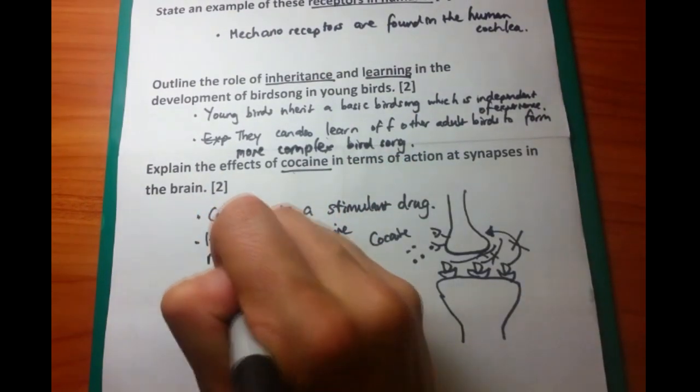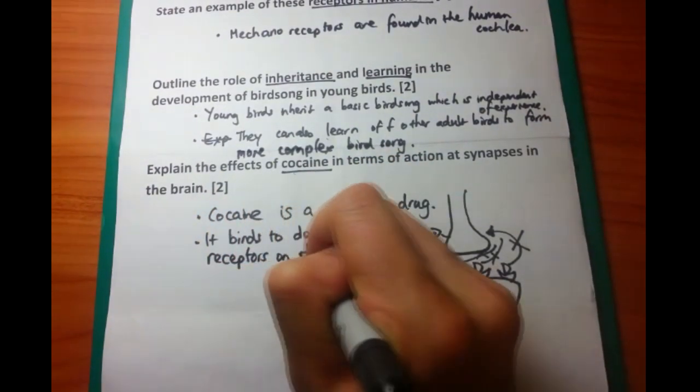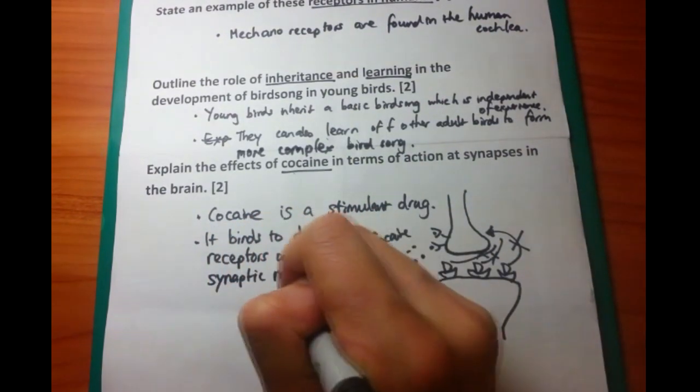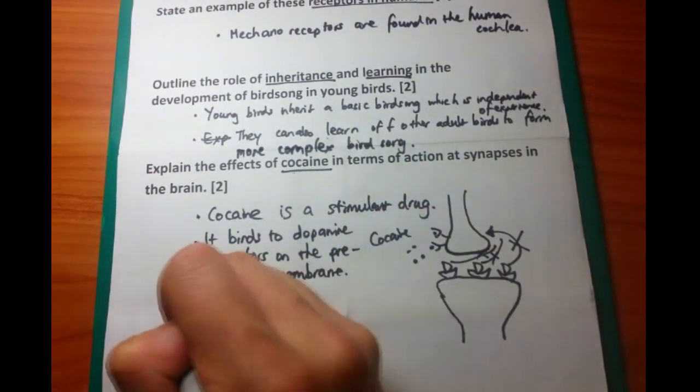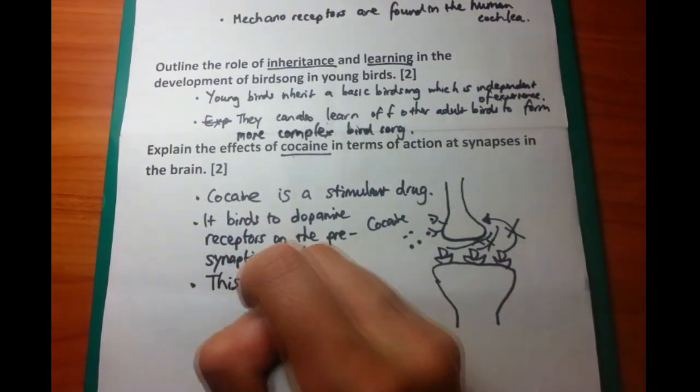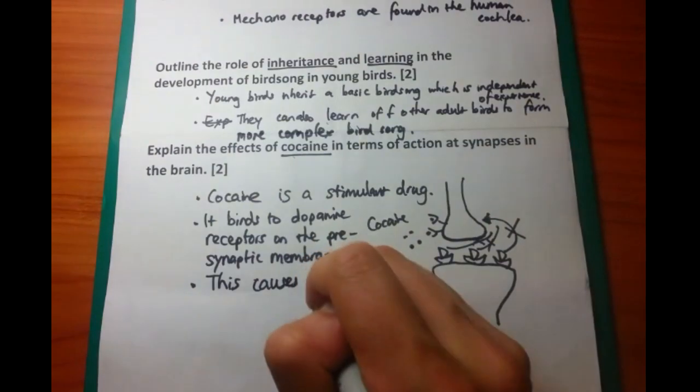What cocaine does is that it blocks this particular process. So let's first talk about it. I've mentioned that cocaine is a stimulant drug. And then when it's in the synapse, it binds to the dopamine receptors on the presynaptic membrane. That's what those little dots are on the top left-hand corner.